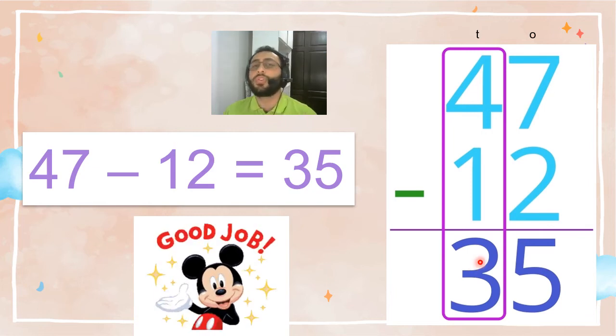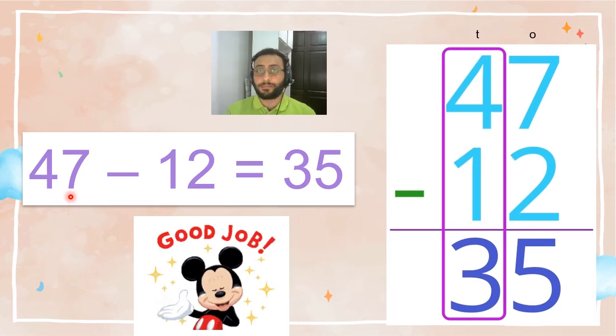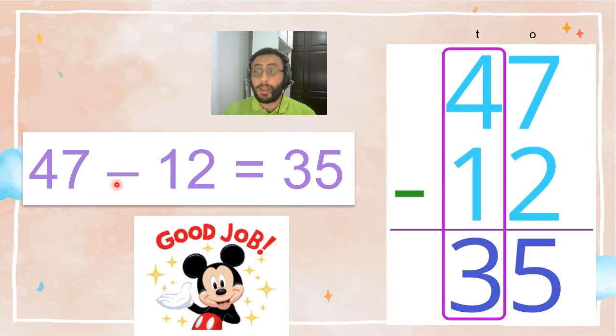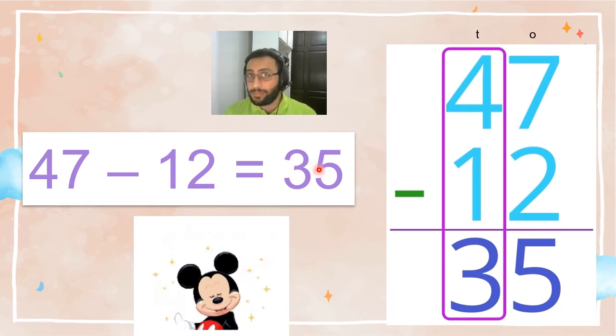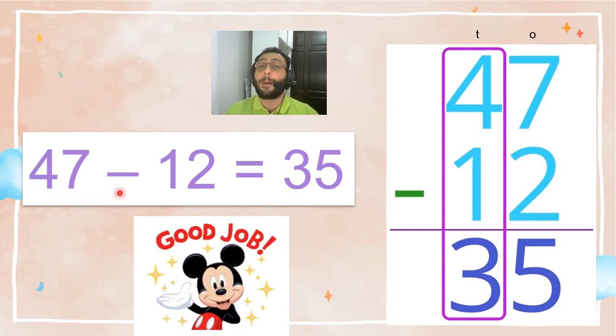Now let's do another one, but before we do that, I want you to repeat after me: 47, 47, minus, minus, 12, 12, equals, equals, 35, 35. Now one more time, but this time we do it fast, okay? 47, 47, minus 12, equals, equals 35. Very good.